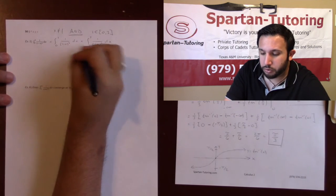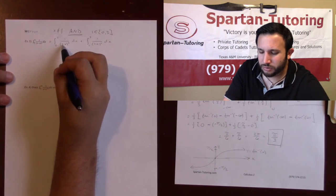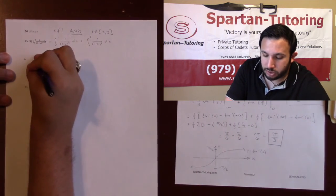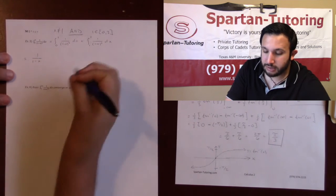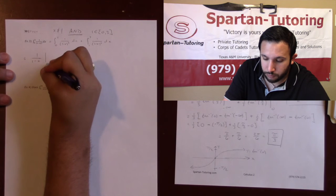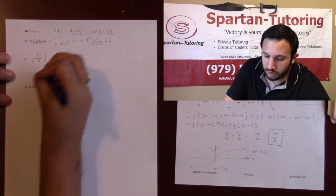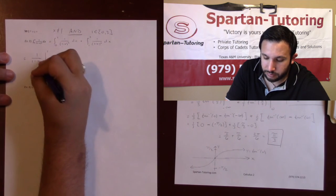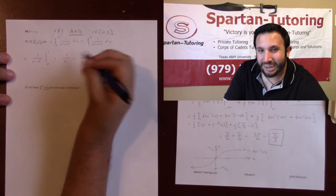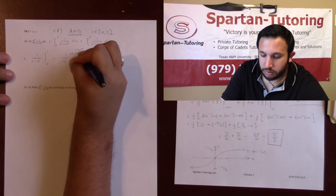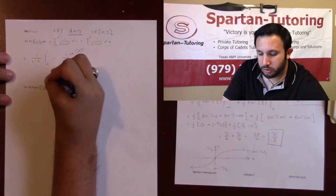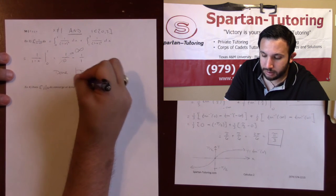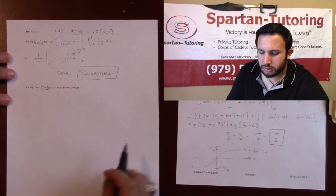Both of these are u-substitutions — set u equal to one minus x and go from there. After the u-sub, you get one over (1 − x) evaluated from zero to one. Plugging in the top: one over (1 − 1) = one over zero, which goes to infinity. Any number over zero goes to infinity, so this diverges. Infinity plus or minus anything is still infinite, so the whole integral diverges.